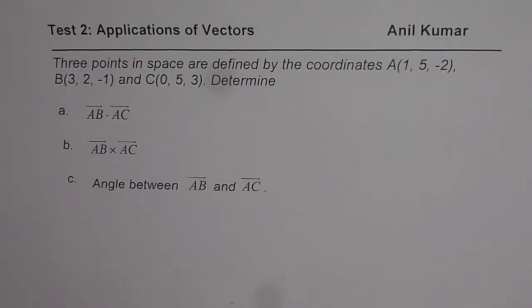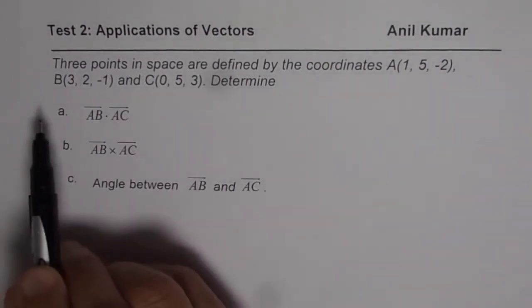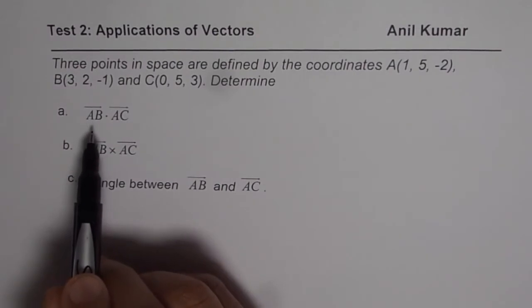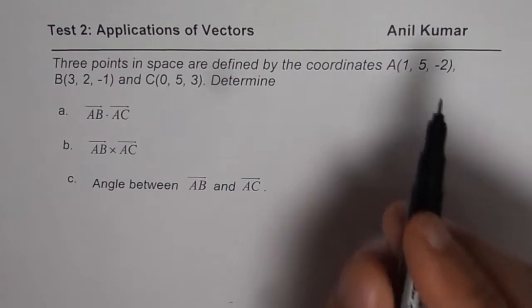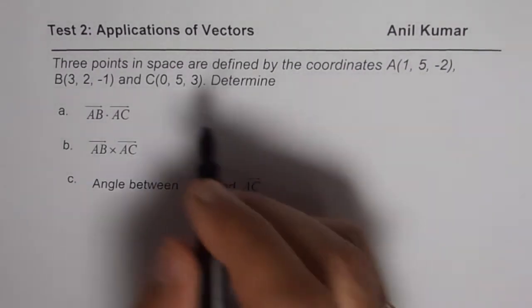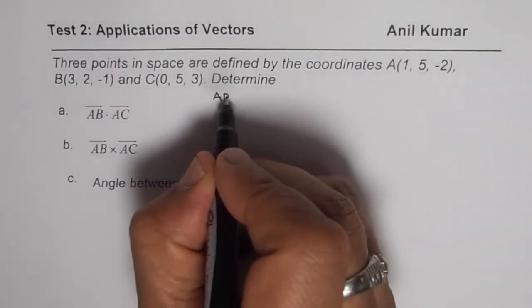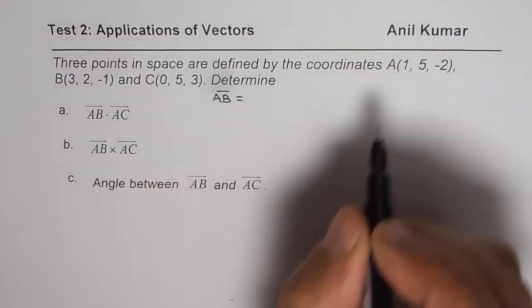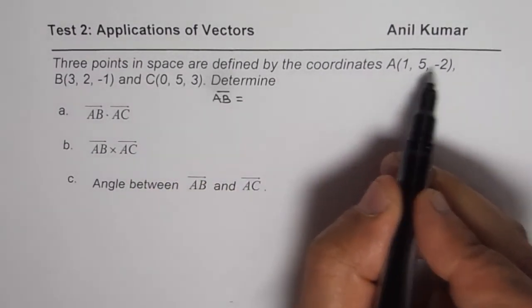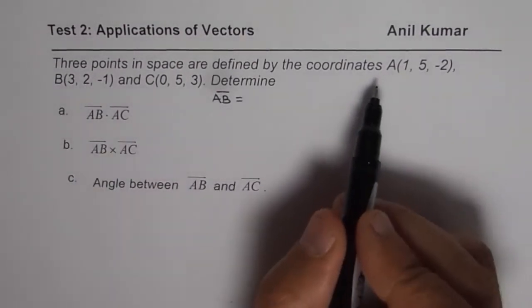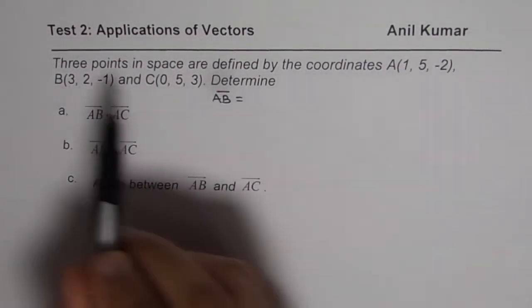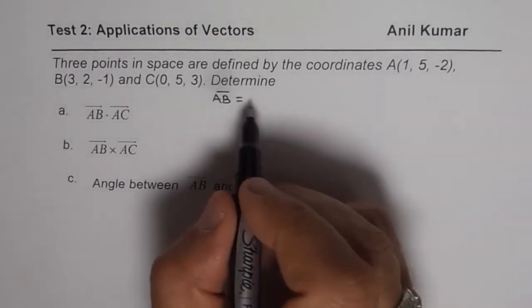Now in such questions, since we are given only the points, we need to find the vectors. So first step always will be to find the vectors themselves. So let us find what is vector AB. So we say vector AB will be, so point A is (1, 5, -2), B is (3, 2, -1). So we will take the difference between these points to get the vector AB.